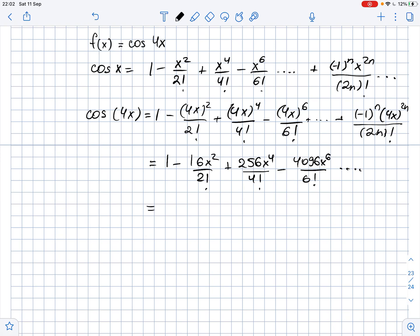So, in summation notation, it looks like this. This is the sum of negative 1 to the power of n times 4x to the power of 2n divided by 2n factorial, where n goes from 0 to infinity.